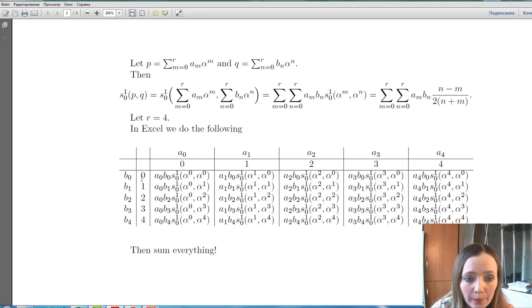For example, 0, 0's summand is a0, b0, s from 0 to 1, alpha to 0, alpha to 0. For example, the number in the third column and the second line is a3 times b2, s from 0 to 1, alpha to 0, alpha to 0. So we will make this table now in the Excel.